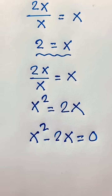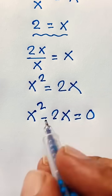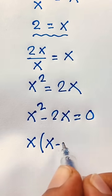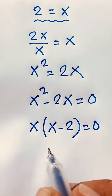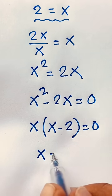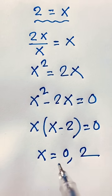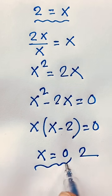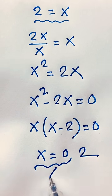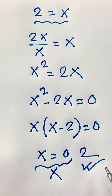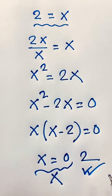Here x is common, so it factors to x times (x minus 2) is equal to 0. This gives us x is equal to 0 or x is equal to 2. Since x equals 0 is not possible, x equals 2 is our valid answer.